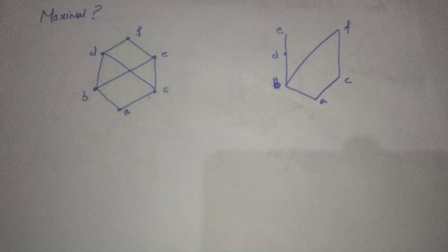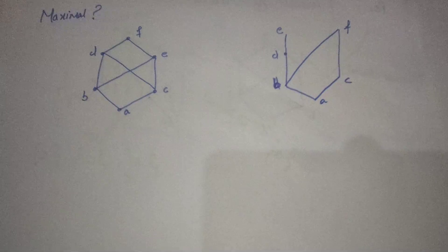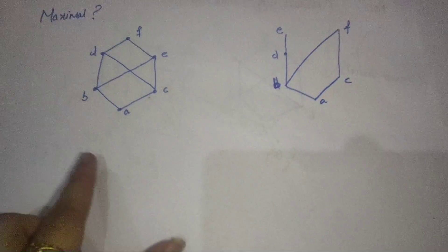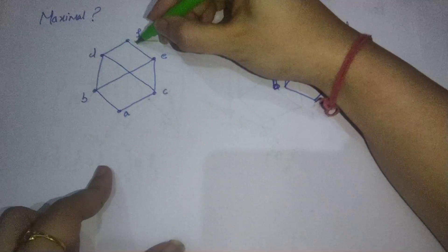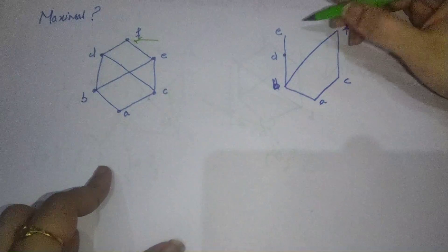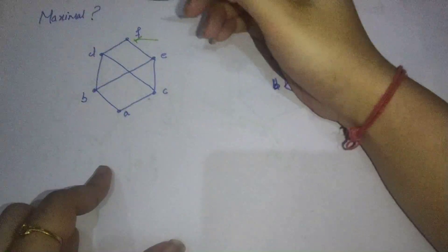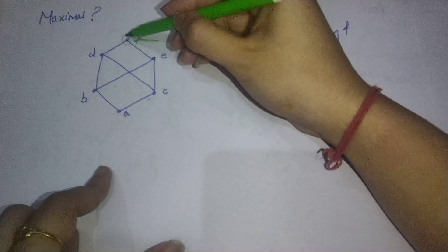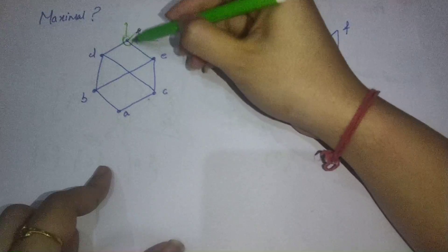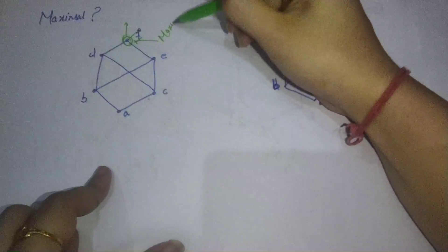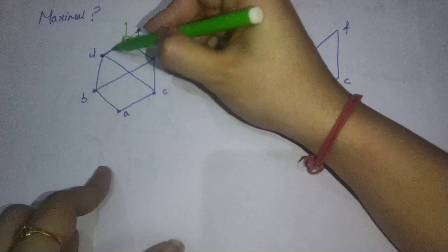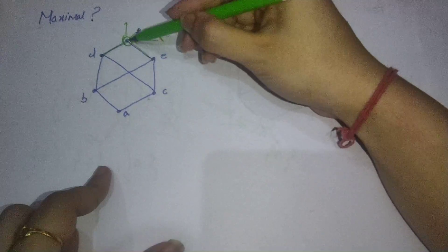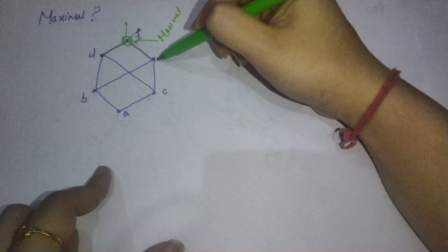Now, what are maximal elements? Maximal elements are those that have no relation ahead of them. Just as minimal elements are found at the base, maximal elements are found at the top. For example, F has no relation ahead of it, so F is the maximal element. D has a relation with F, and E also goes with F, so these are not maximal elements.